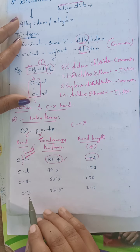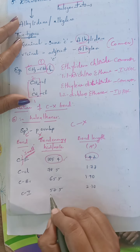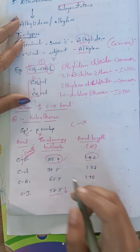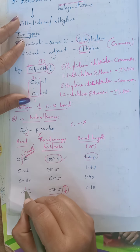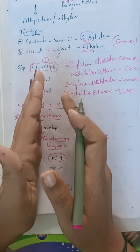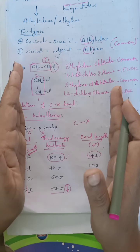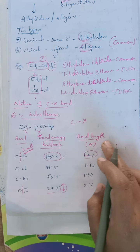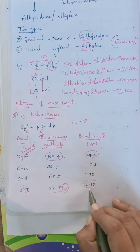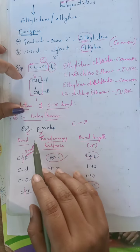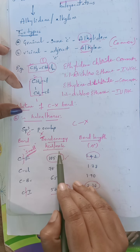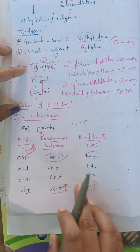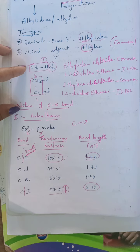Now see the carbon-iodine bond — it requires only 57.5 kilocalories per mole, which is very less compared to the other three. That means less energy is required to break this bond, so the distance between carbon and iodine is increased. Whenever distance increases, bond length also increases. The bond length between carbon and iodine is 2.10 angstroms. Based on the size of the halogen, both bond strength and bond length change.